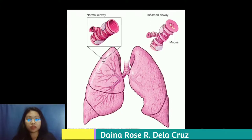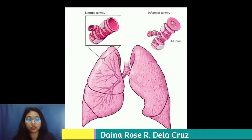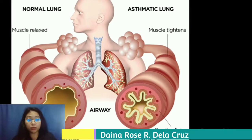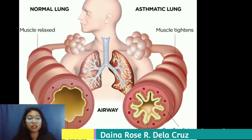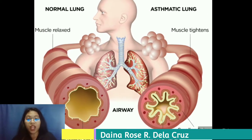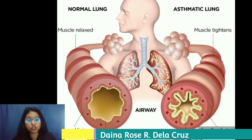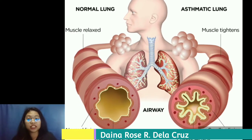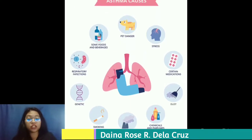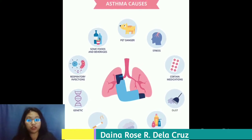Asthma causes inflammation in our airways that can make breathing difficult. The airways are narrow and produce too much mucus, making breathing difficult and triggering coughing, wheezing, and shortness of breath.